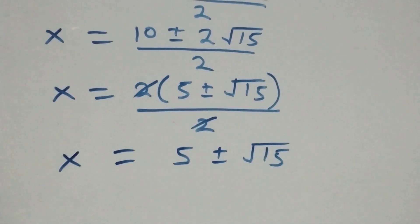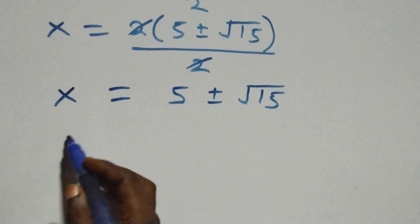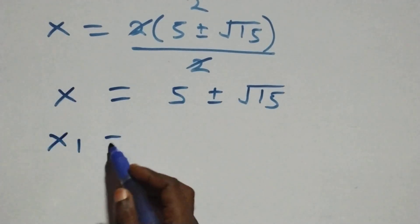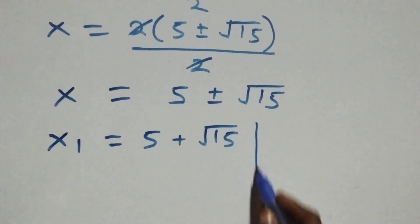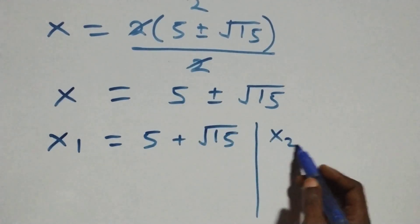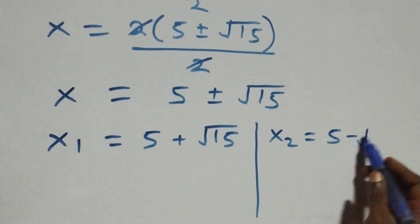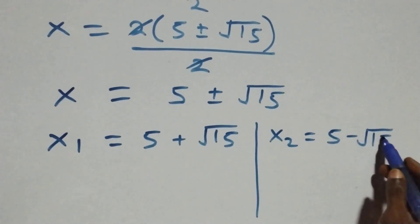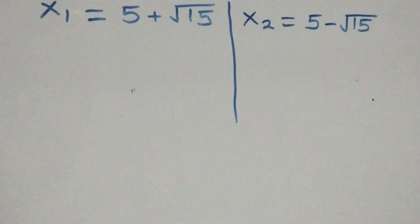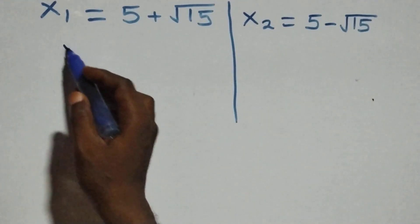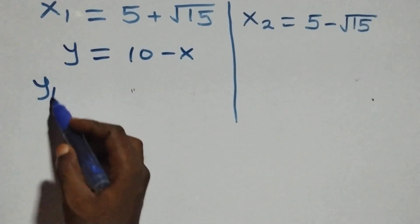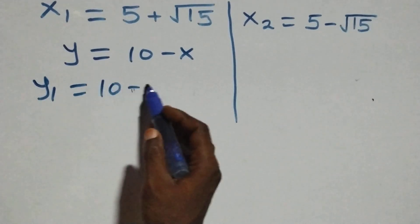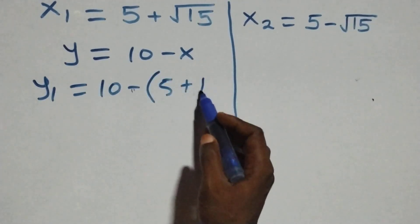So we have two possible values of x. The first is x₁ equals five plus root fifteen, and the second is x₂ equals five minus root fifteen. To find the corresponding y values, we use equation three: y equals ten minus x.